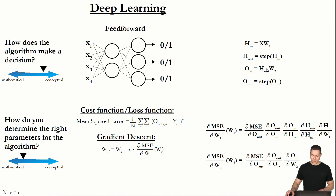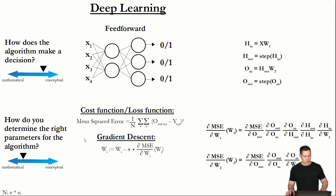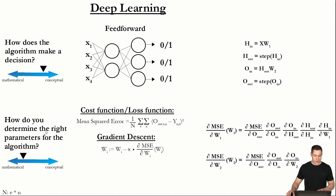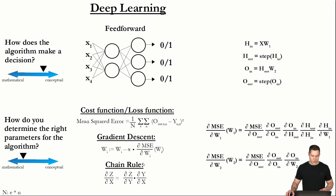The chain rule is the third and final element we need to determine the right parameters for the deep learning algorithm. And now all three elements taken together are what make up the backpropagation algorithm.